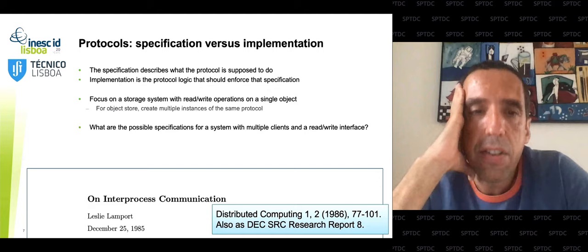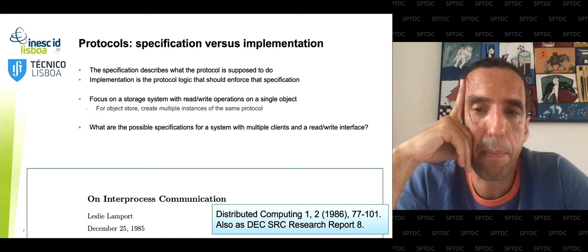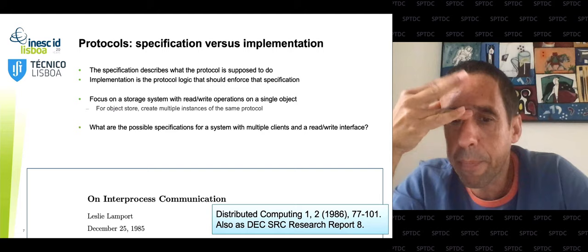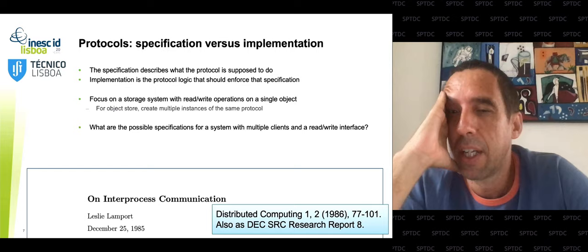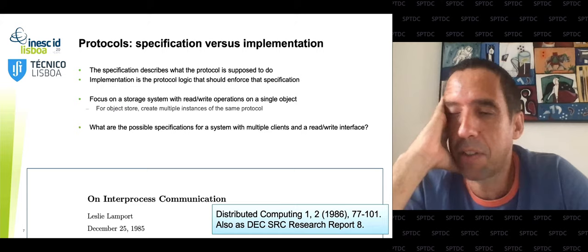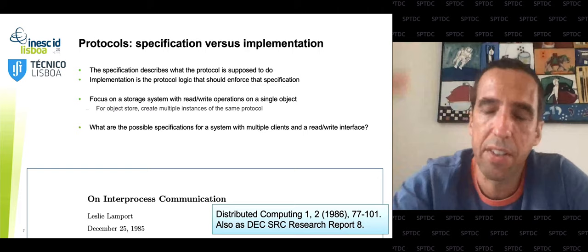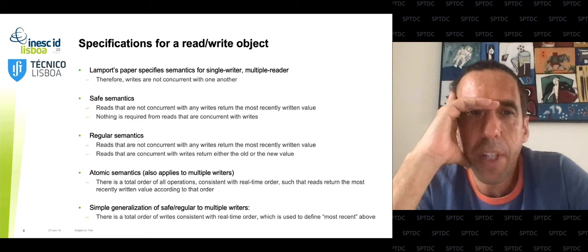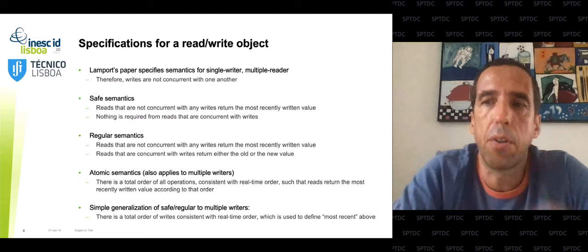What are the possible specifications for a system with multiple clients supporting read and write operations for a single object? The answer was given in a paper by Leslie Lamport, apparently written on Christmas Day in 1985. He proposes three types of semantics. Yesterday you covered two — regular and atomic — but the third, safe semantics, is very important today because of the Byzantine fault model, which introduces new types of behaviors.